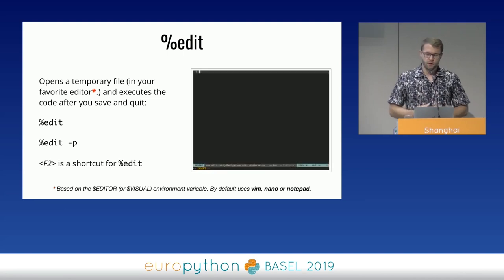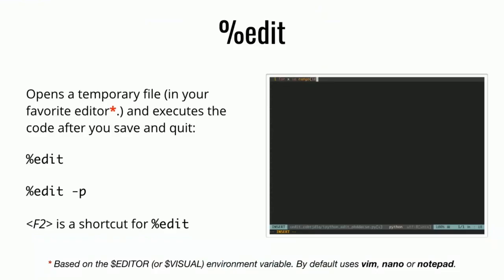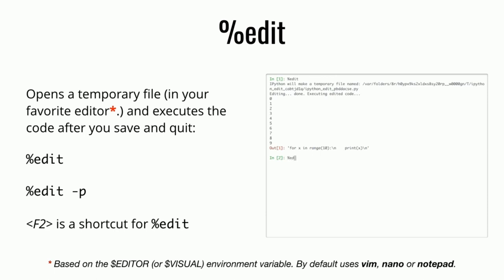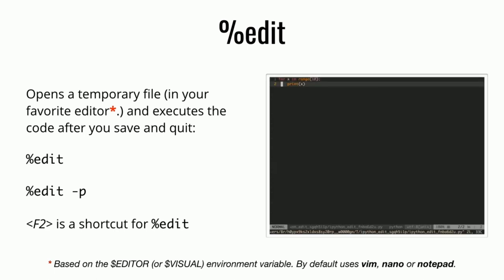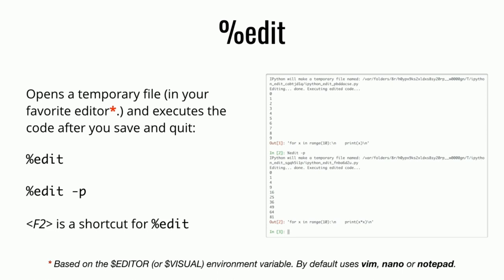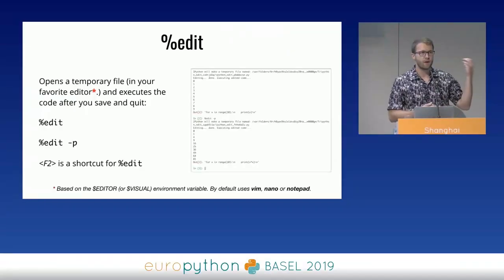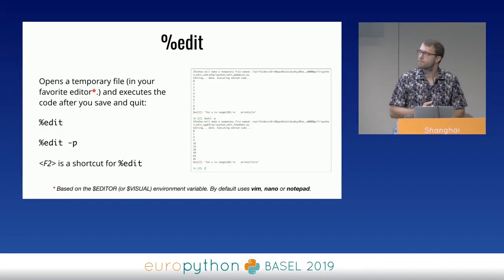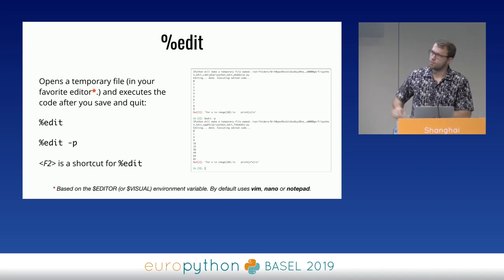Even though writing multiple lines of code in IPython is easier than in the default Python REPL because of smart indentation, you can make it even easier with the edit magic command. It will open a temporary file in your favorite editor where you can type code, and after you save and close that file, it will execute it in IPython. By 'favorite editor' I mean the one defined in the EDITOR environment variable — if you don't set it up, you'll probably end up with nano or Vim. Each time you run the edit command, IPython opens a new file; to go back and edit the same file as last time, pass the -p parameter. You can also press F2 as a shortcut.